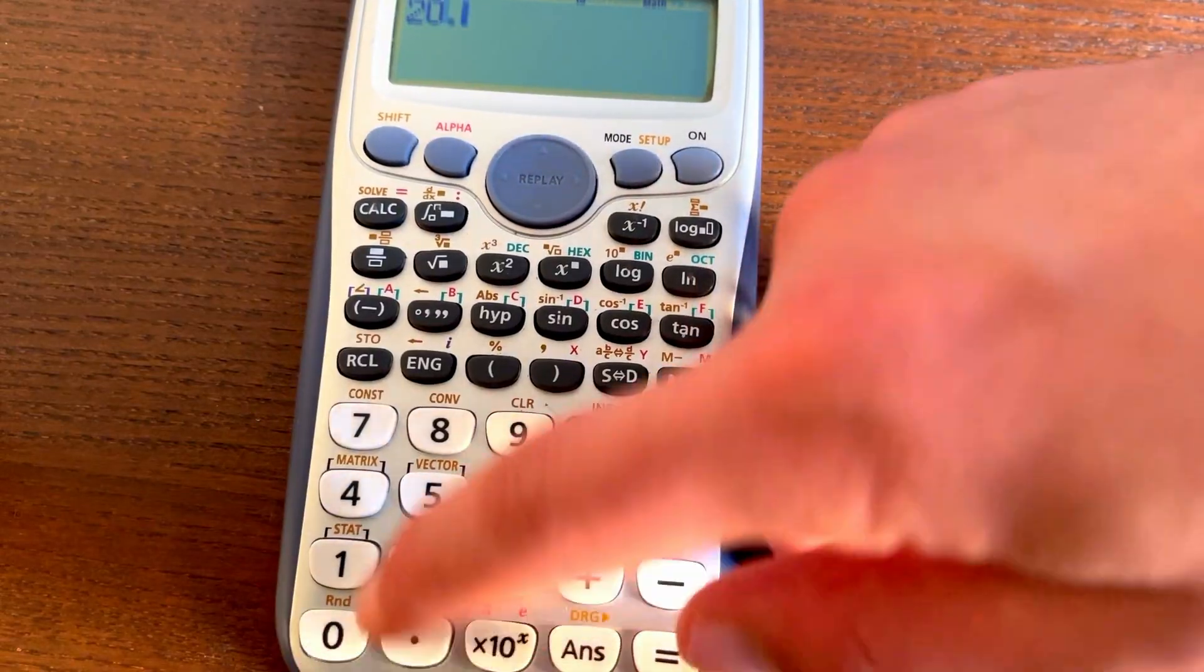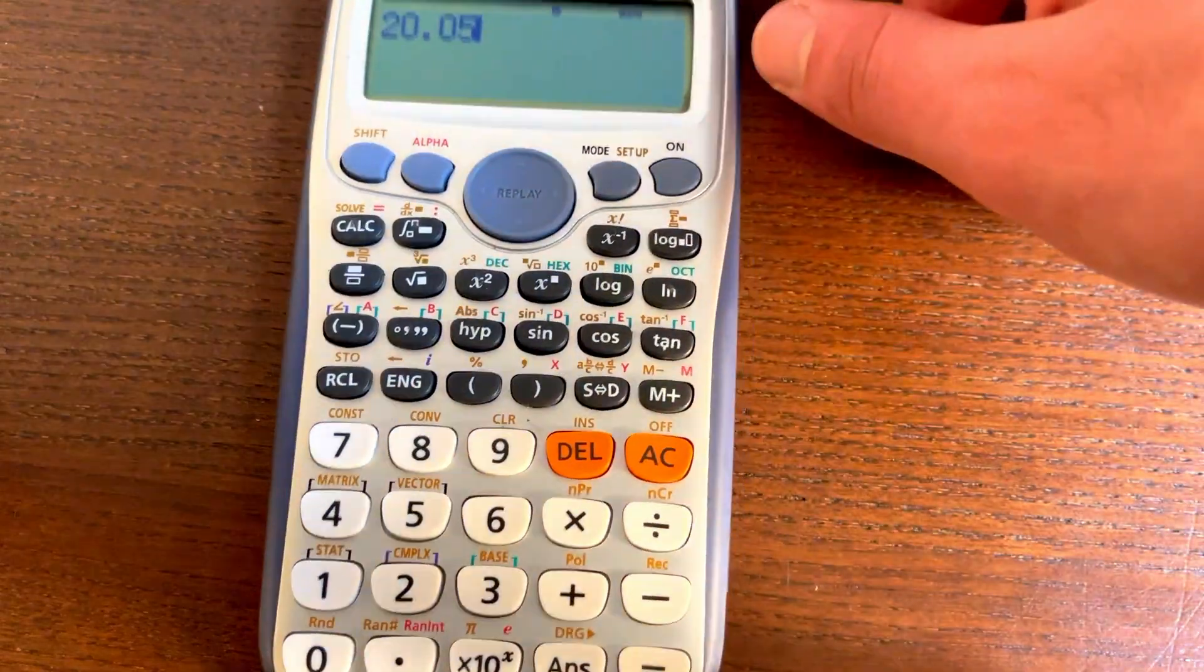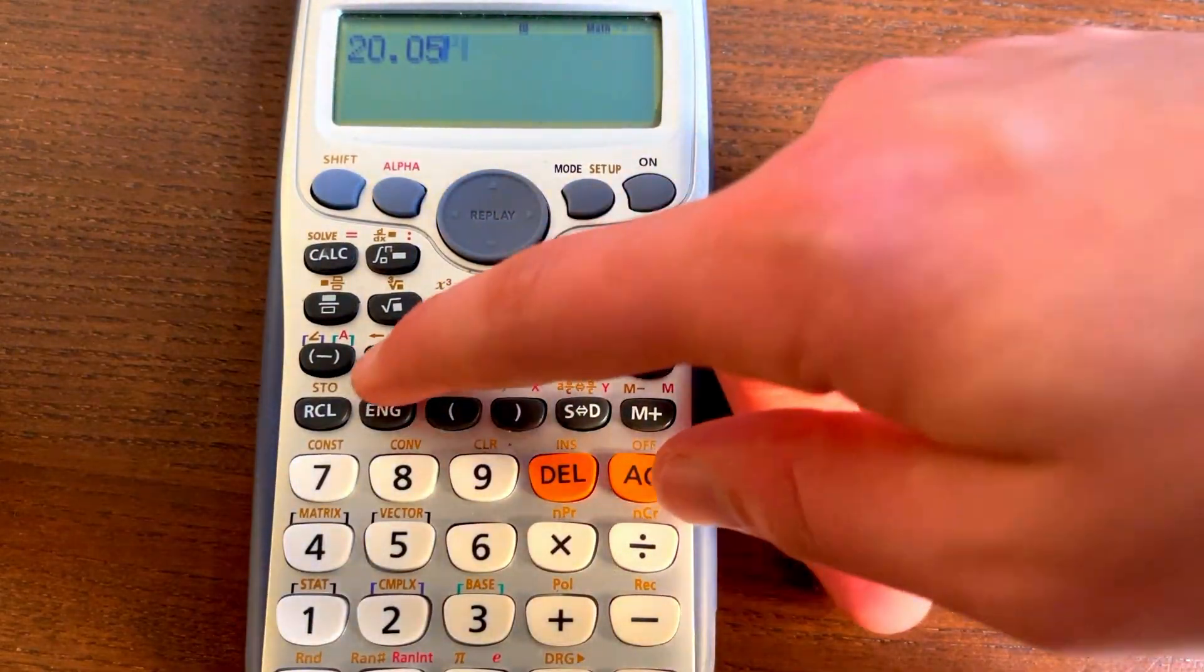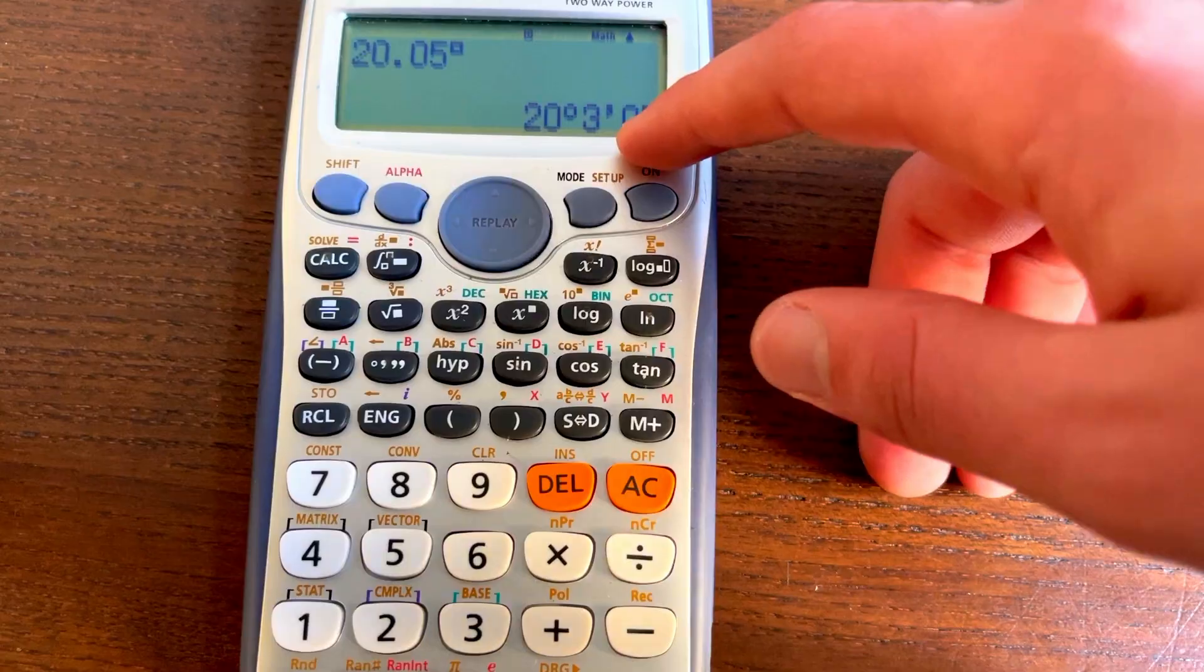For example, if you had 20.005 hours, what I can do now is I can click this button right here, click equals, and it gives me 20 hours, 3 minutes and 0 seconds.